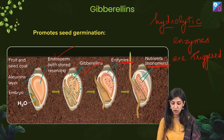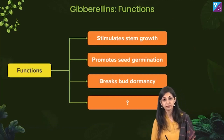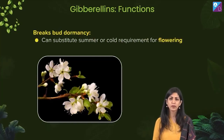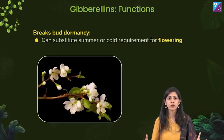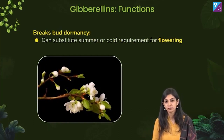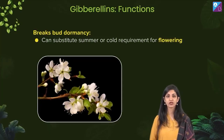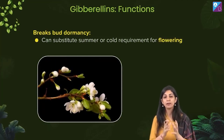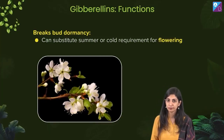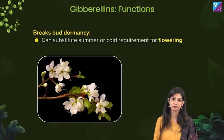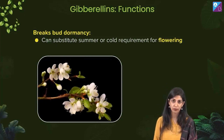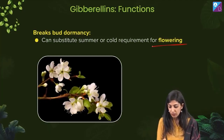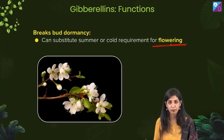Third function: gibberellin breaks bud dormancy. A bud is a mass of cells that is dormant, not doing anything — in suspension mode. It is from the bud that new structures in the plant emerge. We need to break that dormancy, and that is done by gibberellin. This is especially important for inflorescence and flower buds — at the time of flowering, gibberellins are of critical importance.